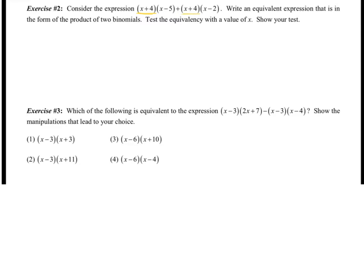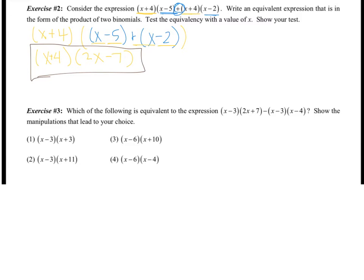I notice that I have X plus 4, and I have X plus 4 — so X plus 4 is the same between the two, and that's going to be our first binomial. The second binomial is found by combining X minus 5 plus X minus 2. So we have X plus X, which is 2X, and negative 5 plus negative 2 becomes negative 7. So our second binomial is 2X minus 7.